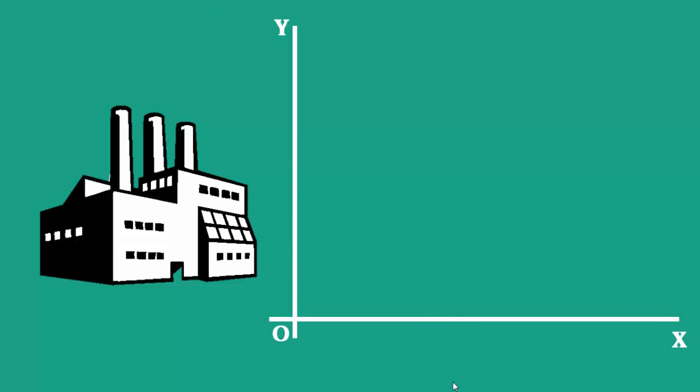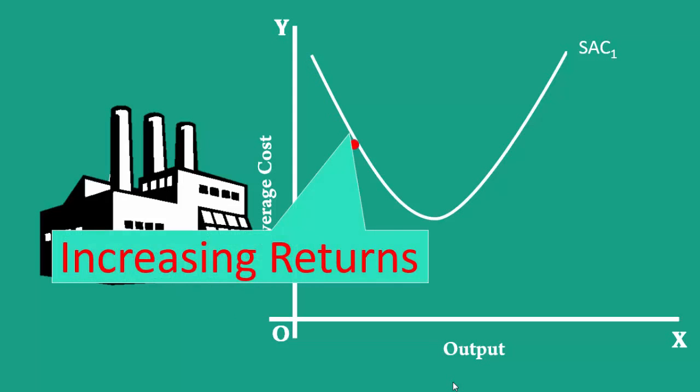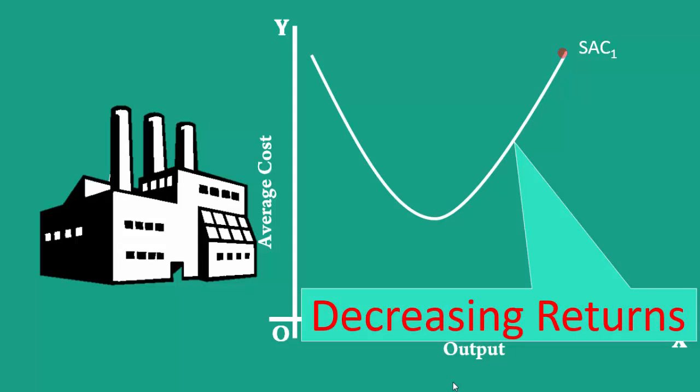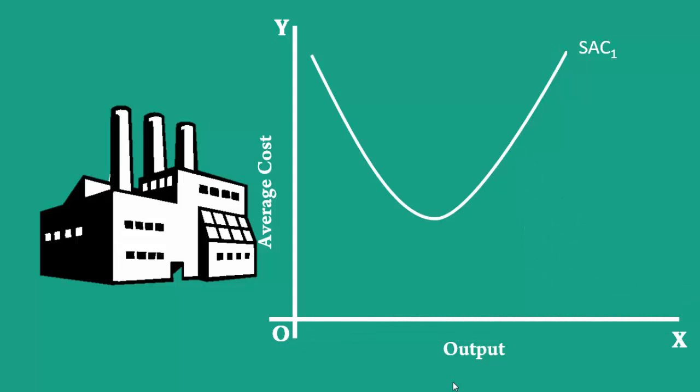It works with a short run average cost curve. The average cost curve is a U-shaped curve. Initially, it falls because of the Law of Increasing Returns. After reaching the minimum, average cost rises due to the Law of Decreasing Returns. It means, beyond the minimum point, with the existing plant, the firm can produce a larger output only at a high average cost. The increasing height of the yellow colored line shows this.